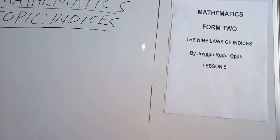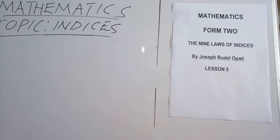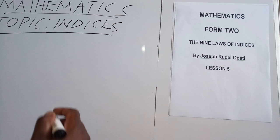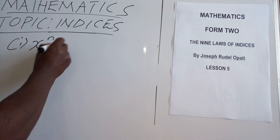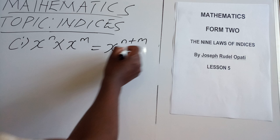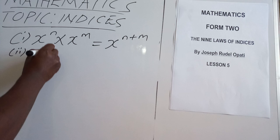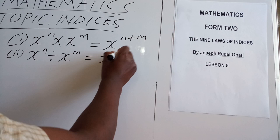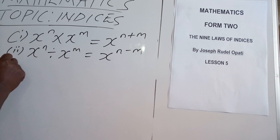So far, we have been able to cover four laws. Today we shall be covering our fifth law. Just a recap of the previous laws: the first law was the law of multiplication of numbers to a similar base — the outcome being you add the indices. Law number two was the law of division of numbers to a similar base — the outcome being you subtract the powers or the indices.